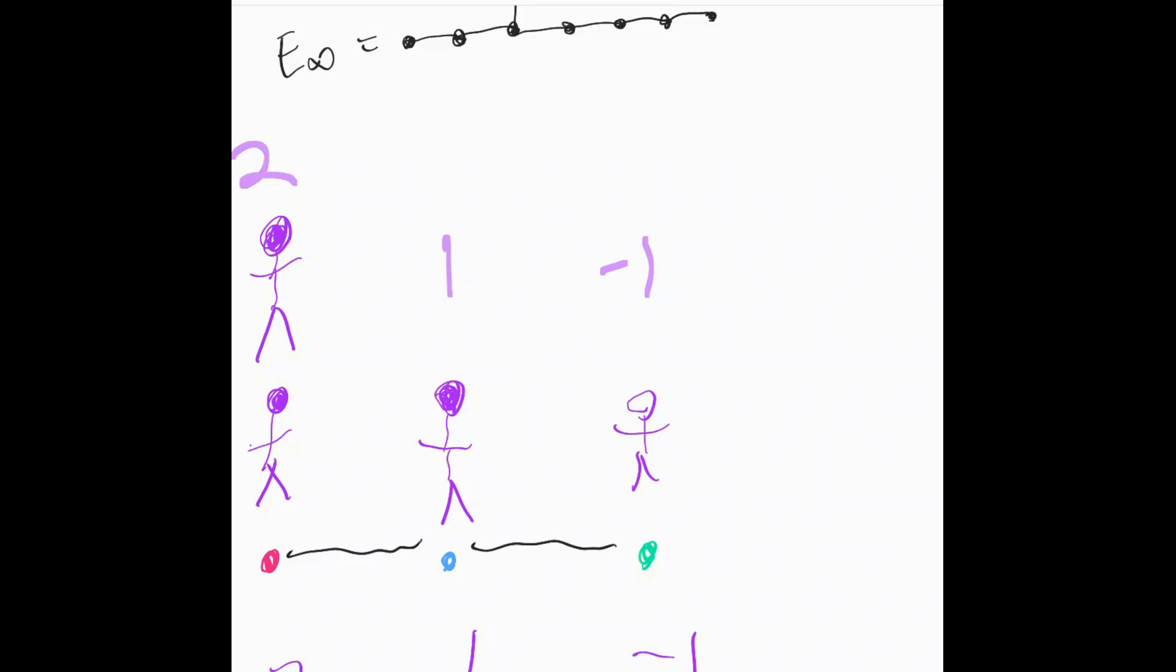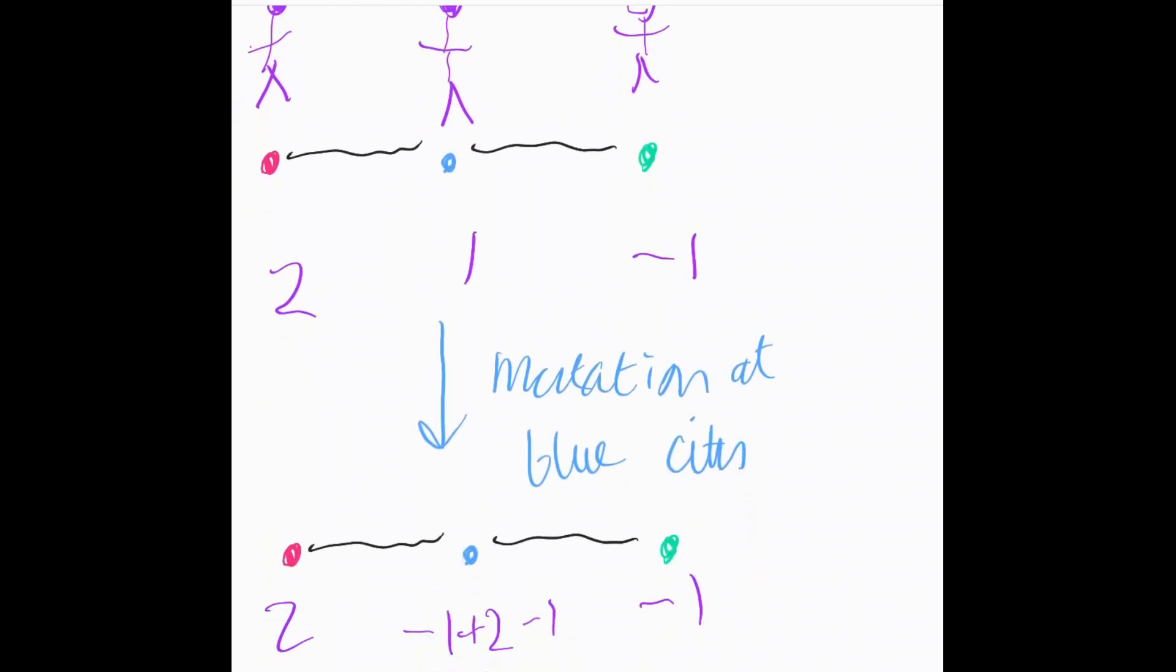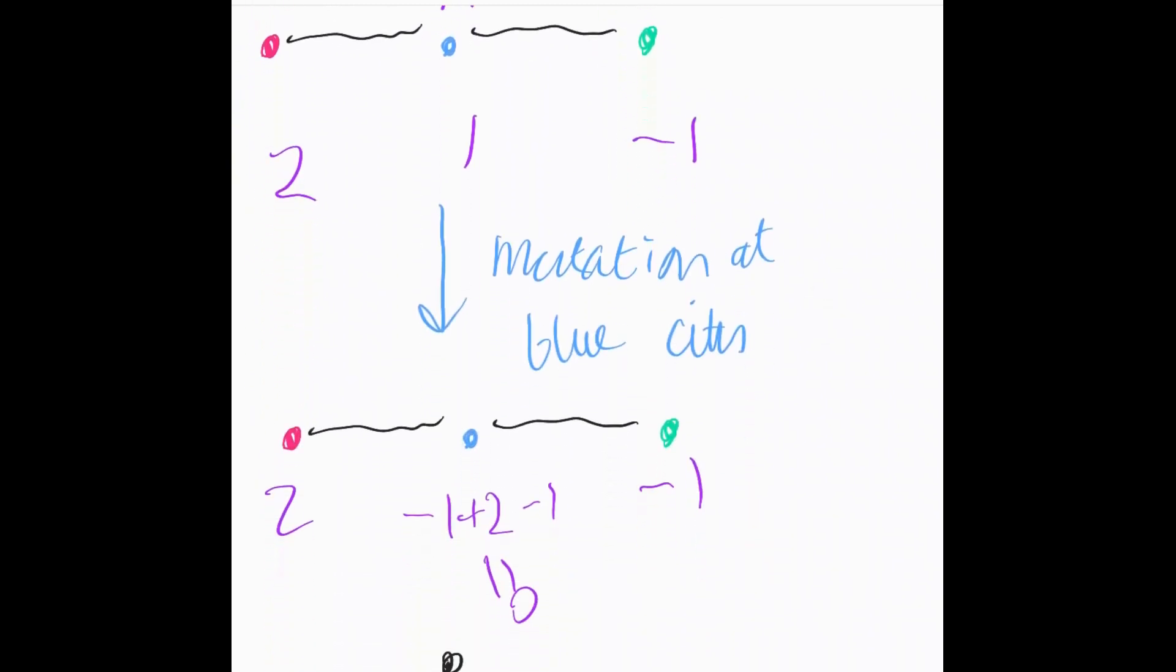And so what we can do is we can do what's called a mutation, let's say a mutation at the blue city. So when we do that, we're going to change the population scores of the different cities.